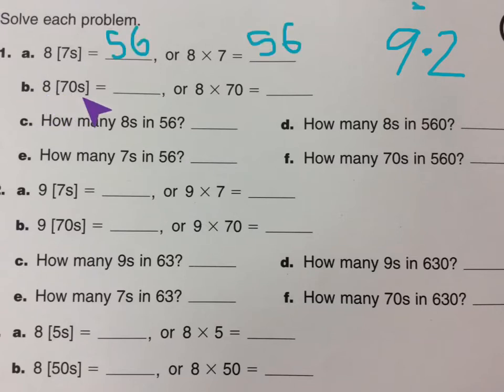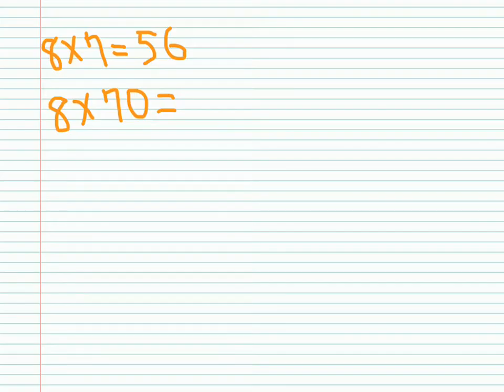And next we have eight seventies, or eight times seventy, which is an extension fact which we've done before. We know that eight times seven is 56, so we can do eight times seventy, which is five hundred and sixty. The zero goes just to the end.